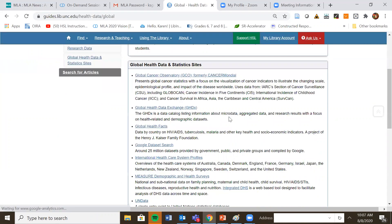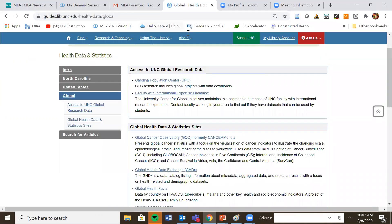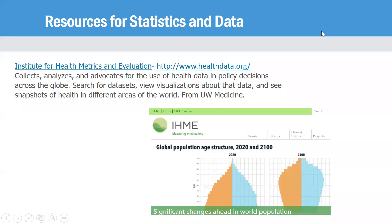You'll also see that we have access to different data sets and statistical information globally. I'm going to show you just a few sample resources you might want to check for statistics and data. The Institute for Health Metrics and Evaluation collects health data and informs policy decisions around the globe, so there are many data sets there. You can view visualizations for the data, and this is done by the University of Washington Department of Medicine.